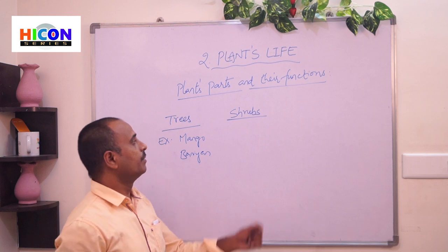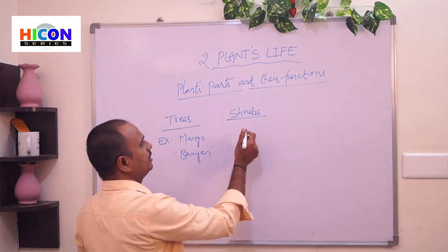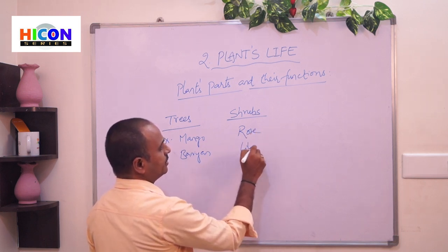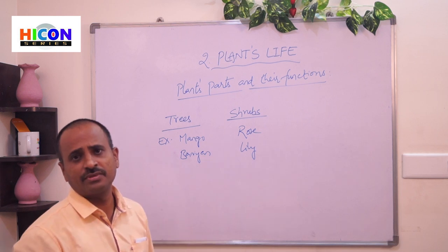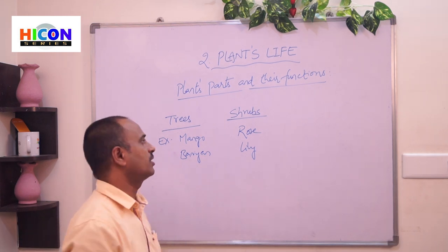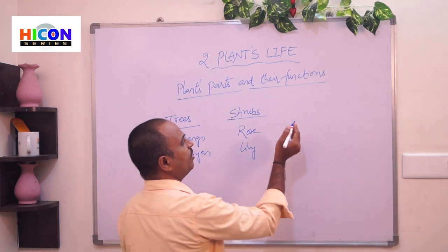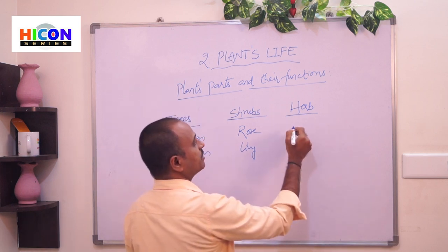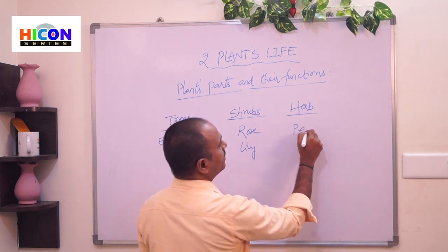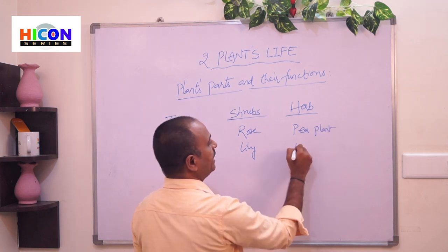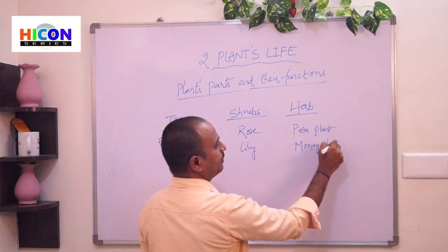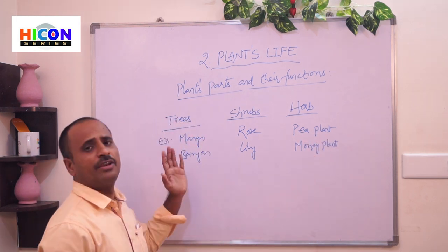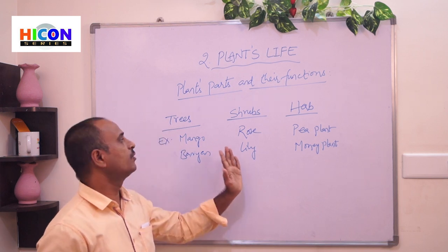Small plants are called shrubs. Examples are rose plant and lily plant. Some flower plants are examples of shrubs. We also observe very very small plants in our surroundings — those very small plants are called herbs. Examples for herbs are pea plant and money plant. This money plant can be observed in various houses.